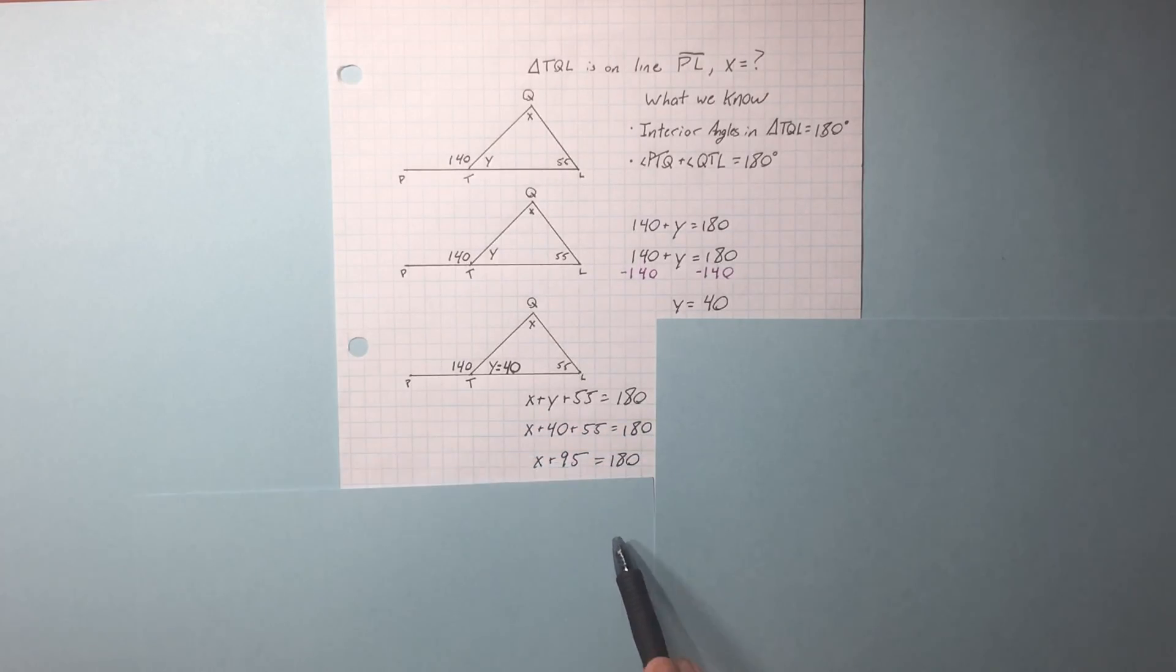We collect our like terms. We subtract 95 from each side. x equals 85. Cool.